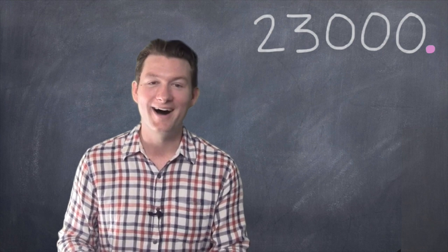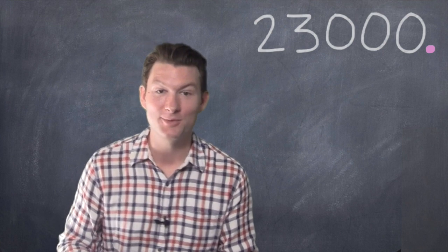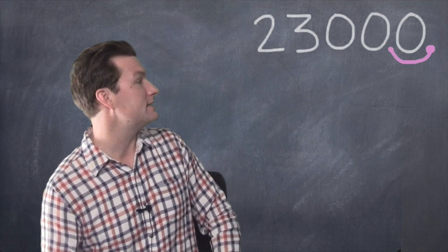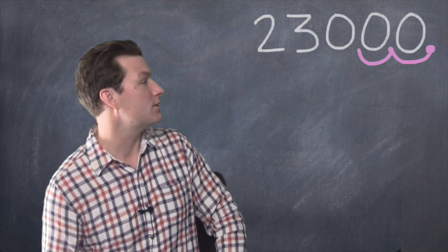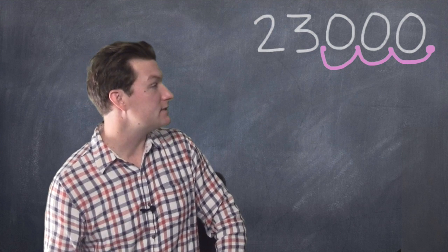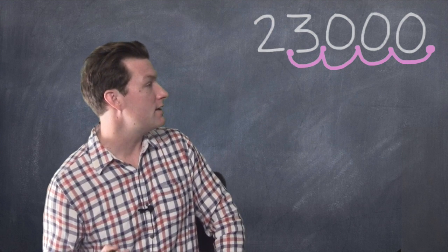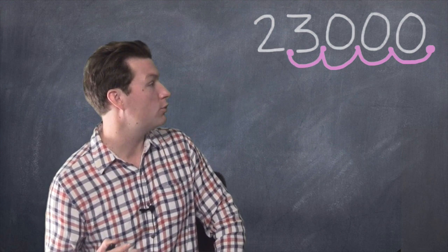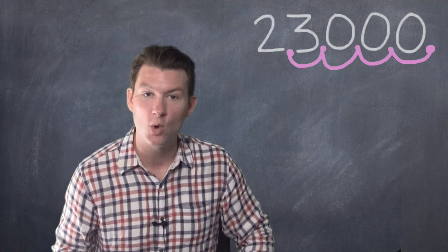So let's move the decimal point until we've done that. Move it one space and now it's 2,300. No. Move it two spaces and now it's 230. No. Move it three spaces and now it's 23. No. Move it four spaces and it's 2.3. 2.3 is between 1 and 10. We've done it.